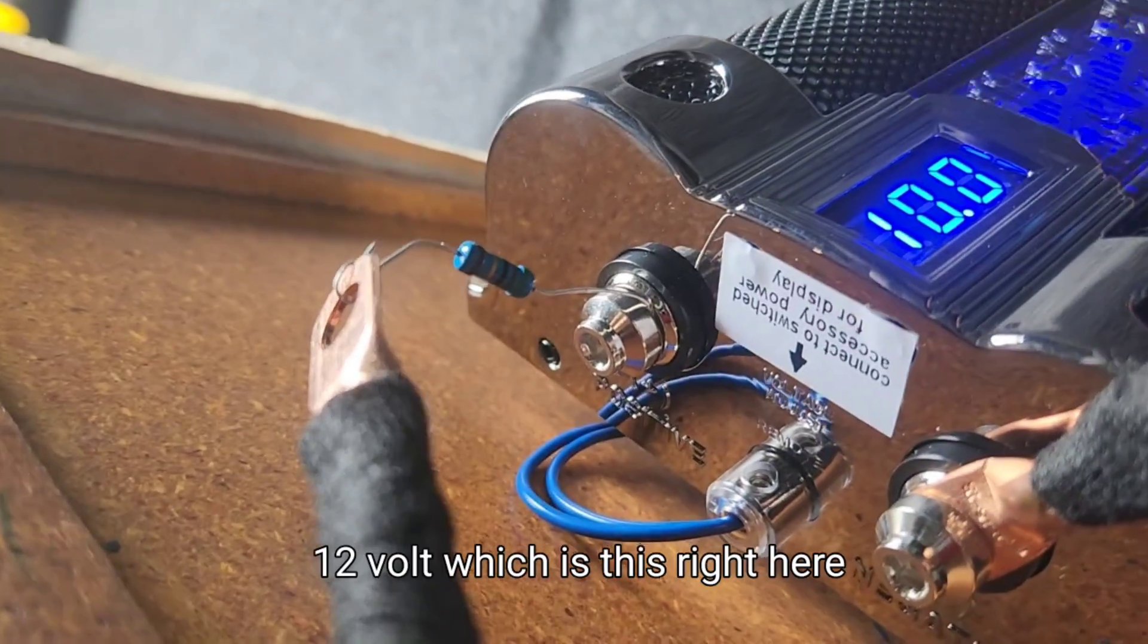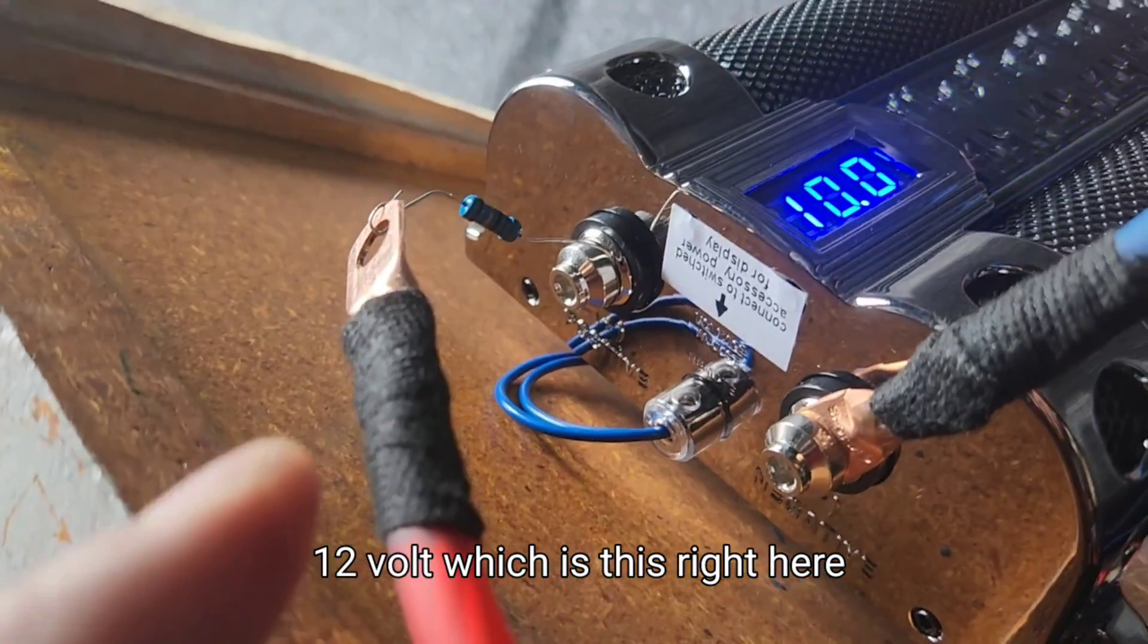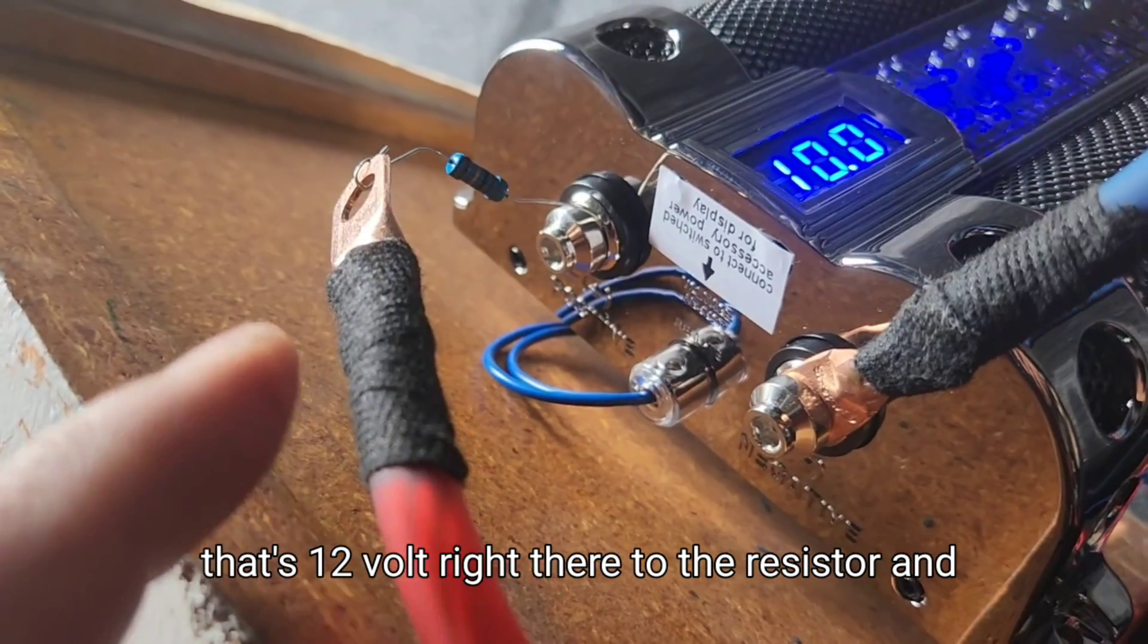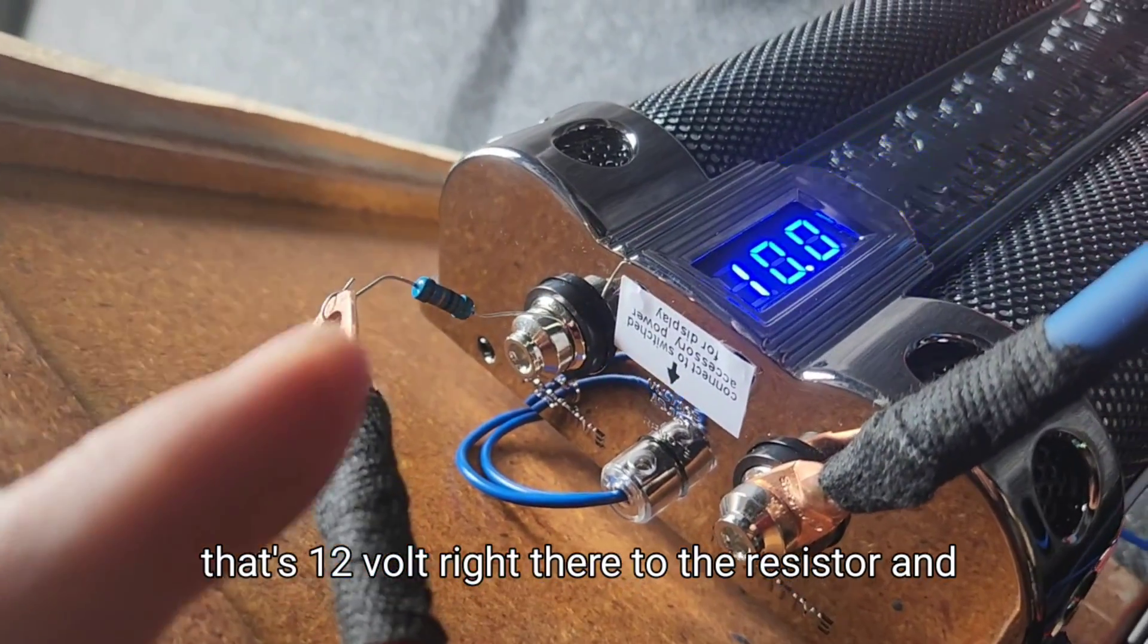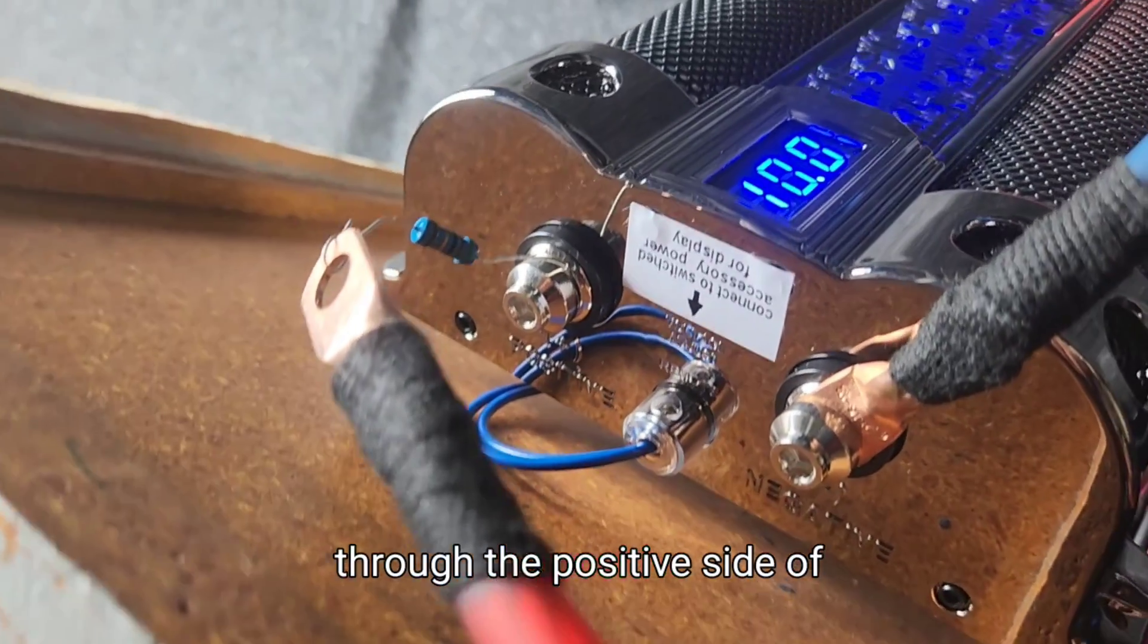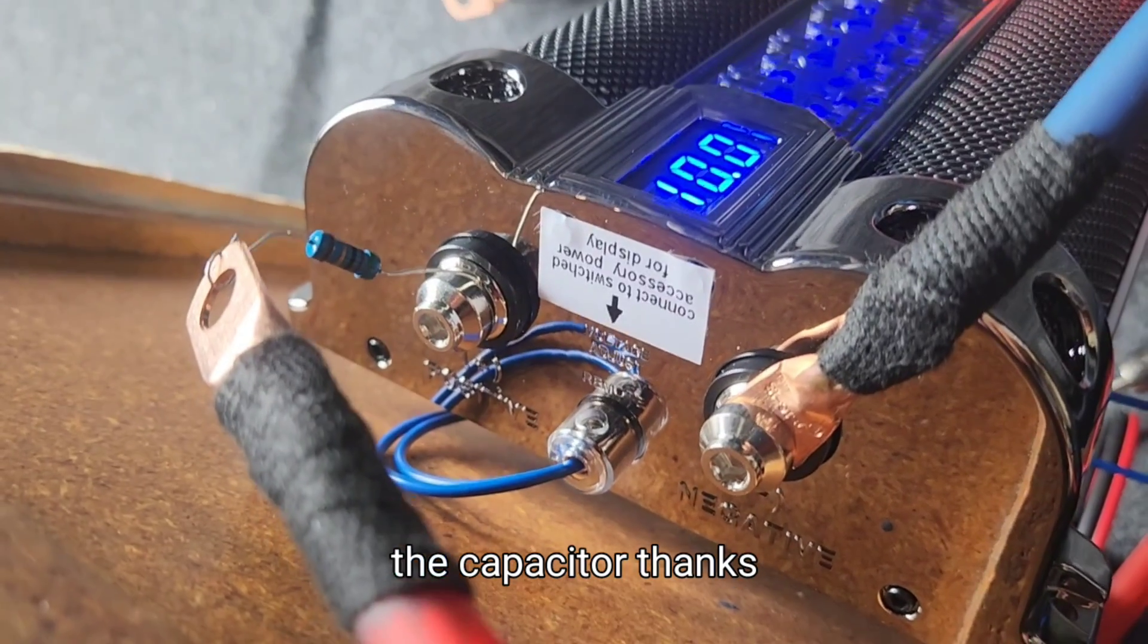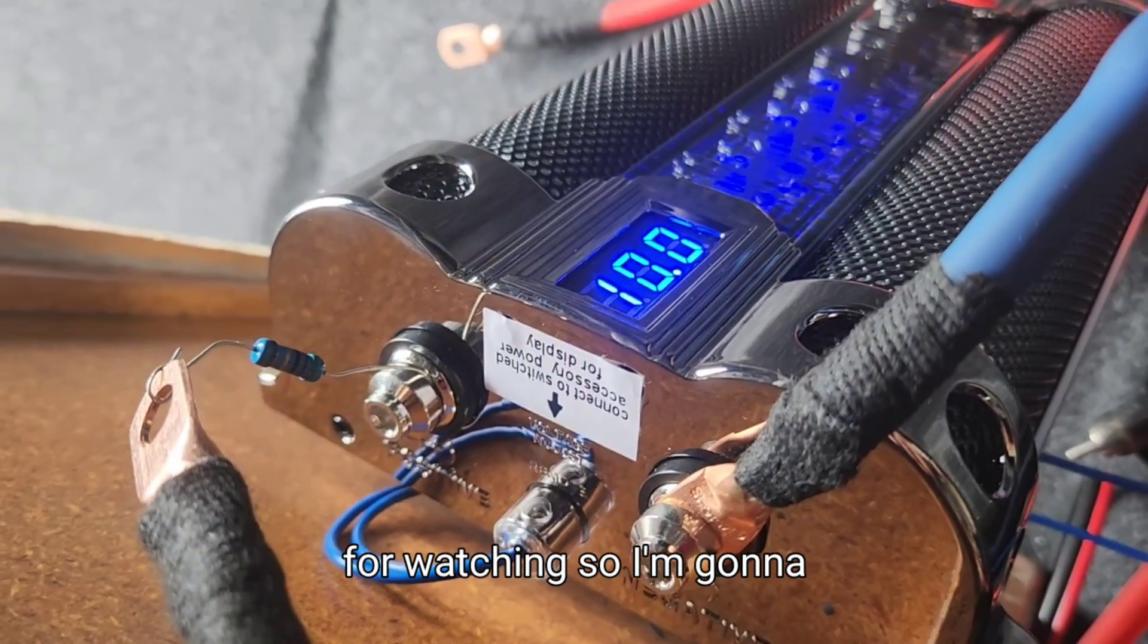Ground is required, and then 12-volt, which is this right here, that's 12-volt right there, to the resistor and through the positive side of the capacitor.